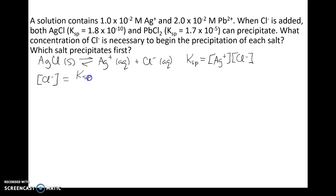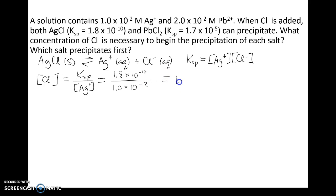We get the formula that chloride concentration equals Ksp over [Ag⁺]. The solubility product constant was given as 1.8×10⁻¹⁰, and the solution contained 1×10⁻² moles per liter silver ions. Doing that division, we get a chloride concentration of 1.8×10⁻⁸ moles per liter. So if the chloride concentration exceeds 1.8×10⁻⁸ moles per liter, precipitation of silver chloride will occur.